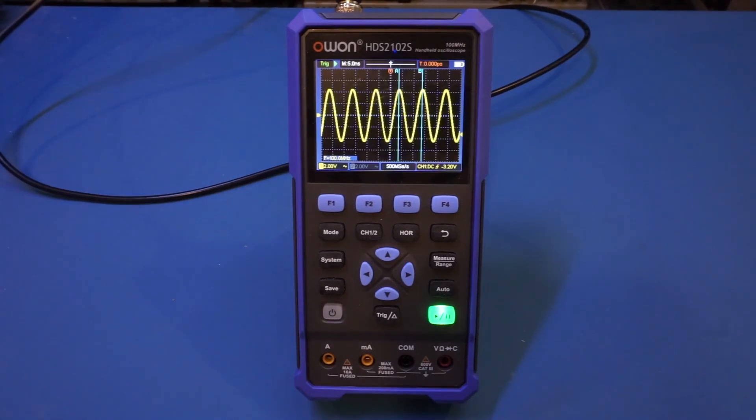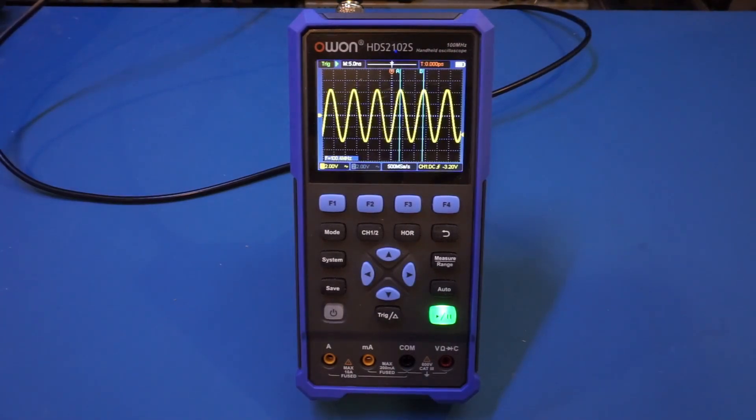I'm sure this would be a rather simple software fix, as all Owen needs to do is adjust the spacing of the graticules to make sure each division represents 2 ns. Hopefully, Owen can release a software update soon to fix this issue.